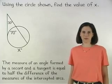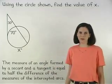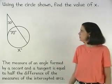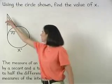In this example, we're asked to use the circle shown to find the value of x. Notice that our given angle is formed by a secant and a tangent.